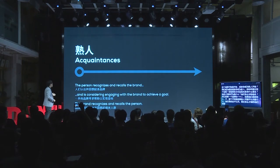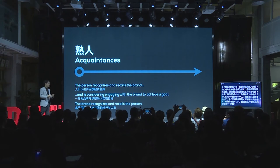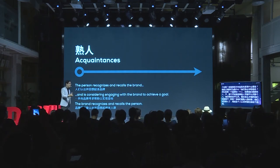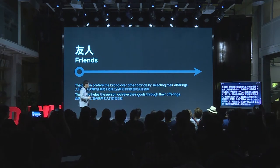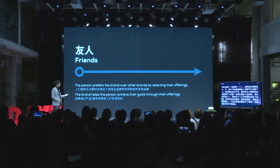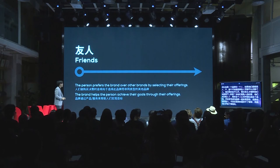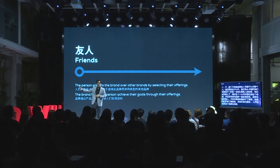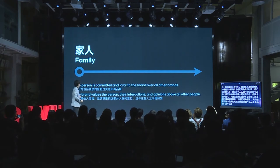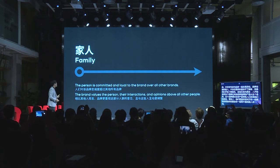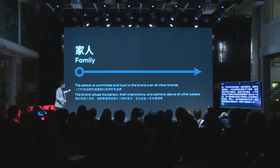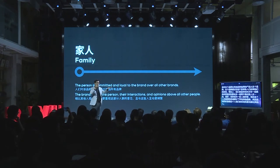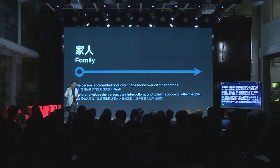When they're acquaintances, the person recognizes and recalls the brand, and is considering, engaging, and achieving a goal together with the brand — and the brand also recognizes the person. When they become friends, the person begins to prefer this brand over other brands by selecting its offerings, and the brand helps people achieve their goals. They prefer being with each other, just like you prefer spending more time with a friend. When you become family, the person is committed and loyal to the brand over all others, and the brand simultaneously values this person's interactions and opinions. They've elevated the relationship together.